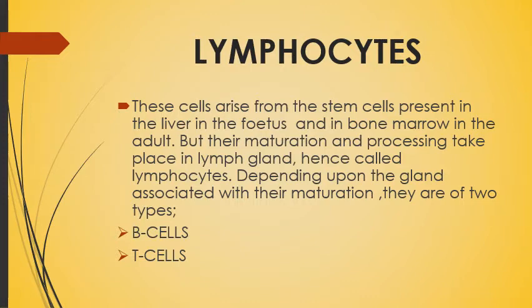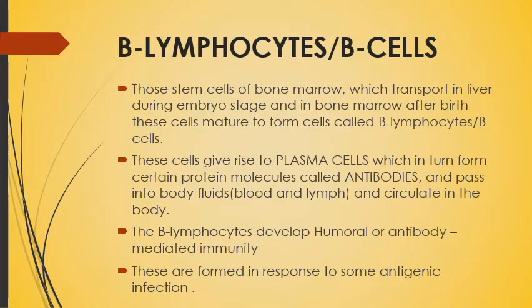Depending upon the gland associated with their maturation and processing, lymphocytes are of two types: B cells and T cells. First we will discuss B lymphocytes or B cells. Those stem cells of bone marrow which transport to the liver during the embryo stage and to bone marrow after birth mature to form B lymphocytes. The name B comes because they mature and are processed in the bone marrow.